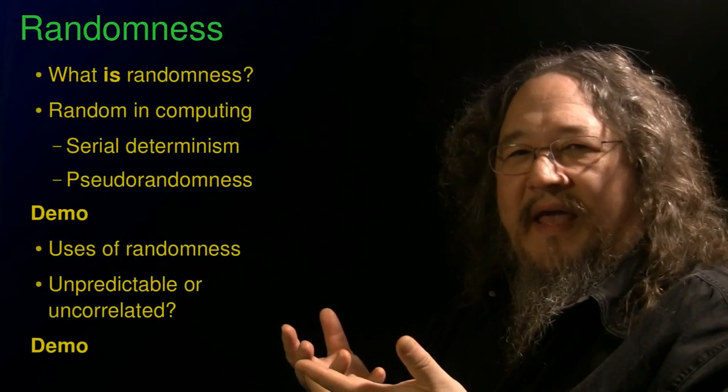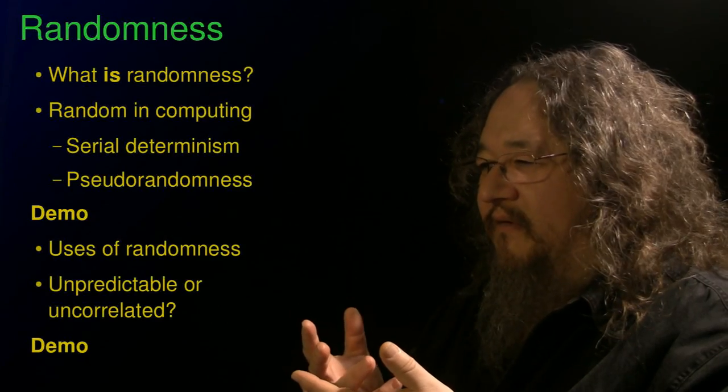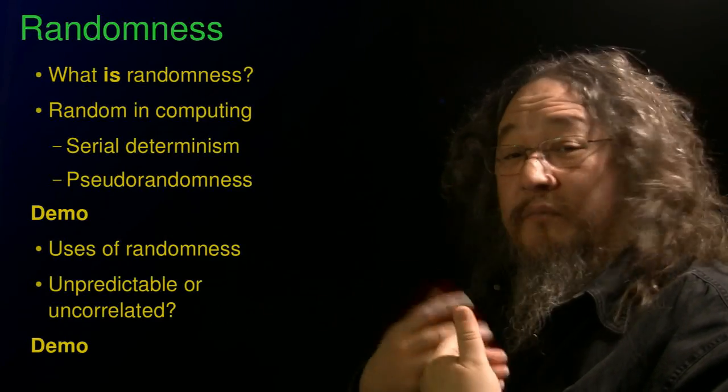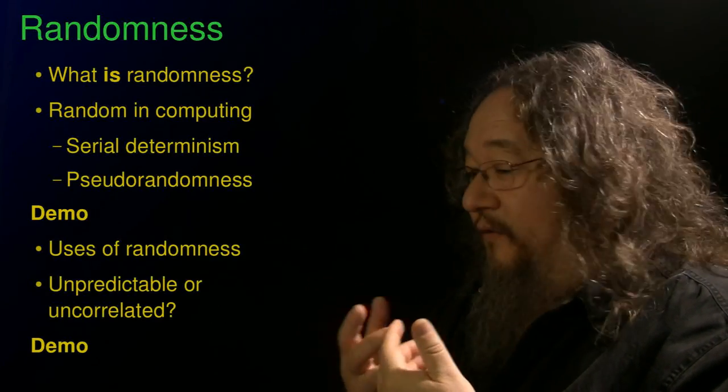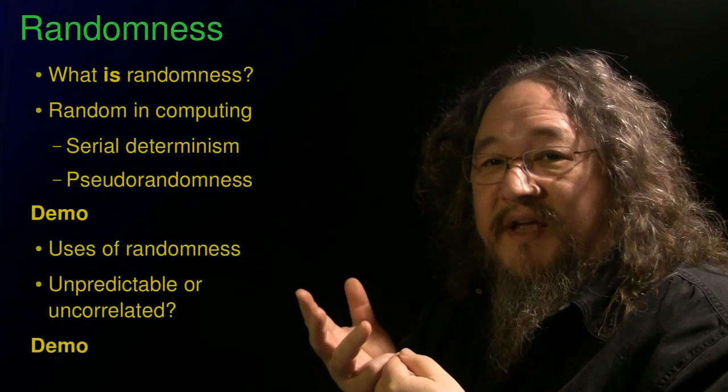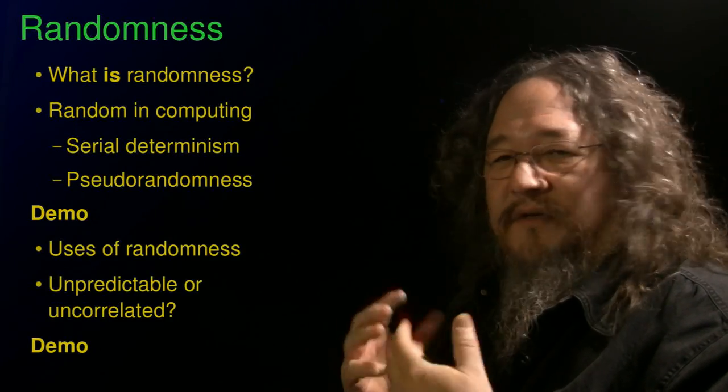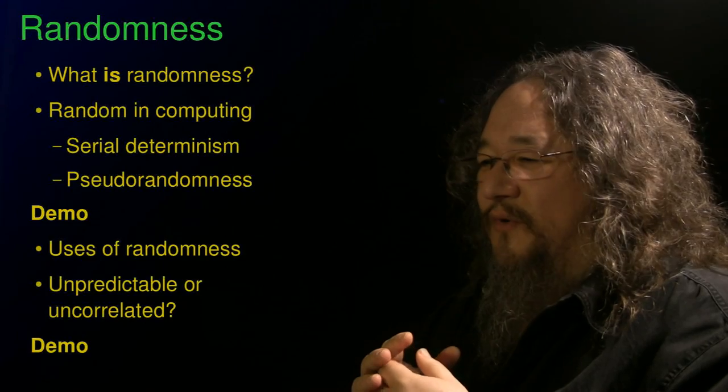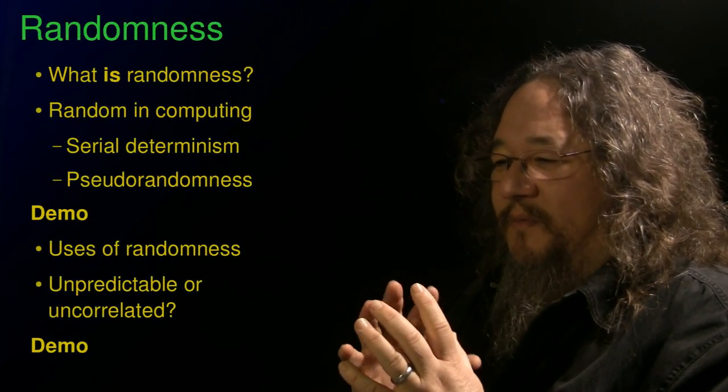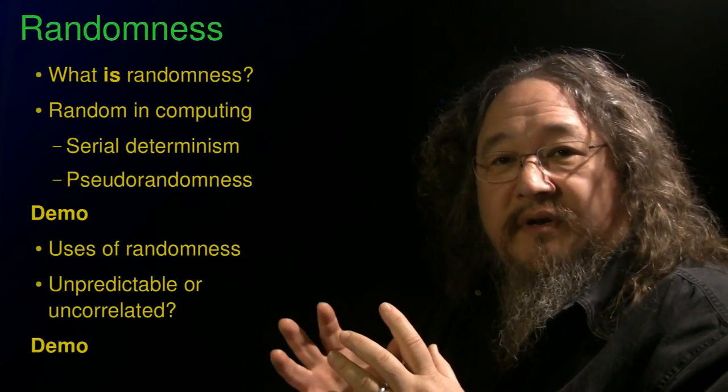If you see something happening and it's got some kind of pattern to it, then you say that's not random. If you could predict what's happening next, if you could even just predict better than chance what's going to happen next, then that's not random. So something that's random is supposed to not have a pattern, not be predictable.